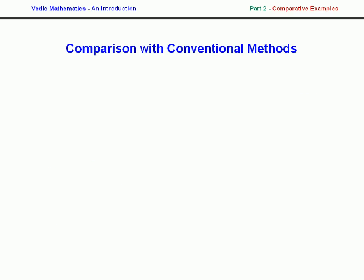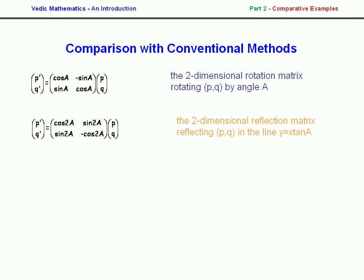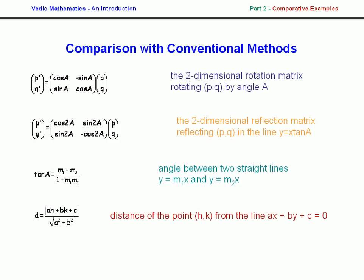Comparing four methods: the 2D rotation matrix, the reflection matrix, the formula for the angle between two lines, and the formula for the distance of a point from a line — all of these can be solved using triple addition and/or subtraction. One method unifies all of them. This is one of the key features of the Vedic system: how it unifies different areas of mathematics, making it much more coherent and integrated.